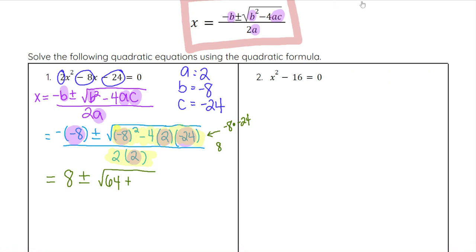If we do 8 times 24, you can set it up: 8 times 4 is 32, carry the 3. 8 times 2 is 16, plus 3 is 19. So that's 192. We get plus 192.